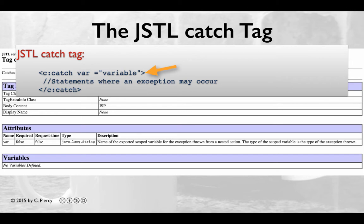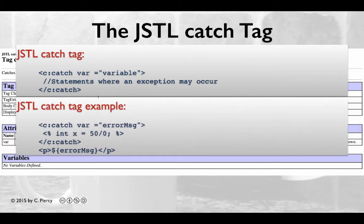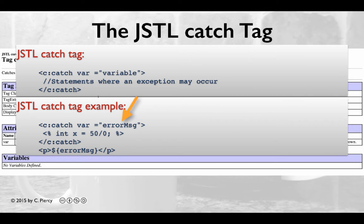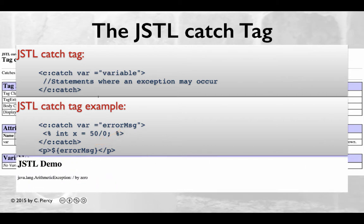We surround the statements where an exception may occur with the catch and the slash catch. We include as a parameter a variable that will be able to store a string describing the exception. For example, here we're going to purposely cause an error by dividing by zero. We do this in a line: int x equals 50 divided by zero. Of course, this is not possible in Java and will throw an exception. We've surrounded this line with our JSTL core catch tag. The single parameter var is set to a new variable called error message. So when the exception occurs, the standard error message will be stored in the variable error message. We're then using the expression language to print the value of that error message to the browser, and our output would look as we see here.